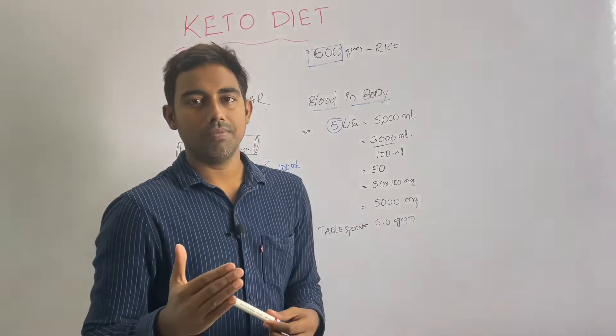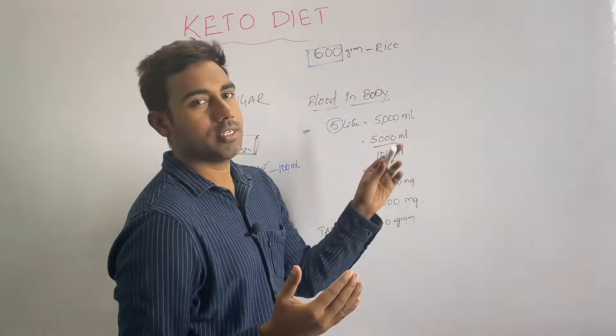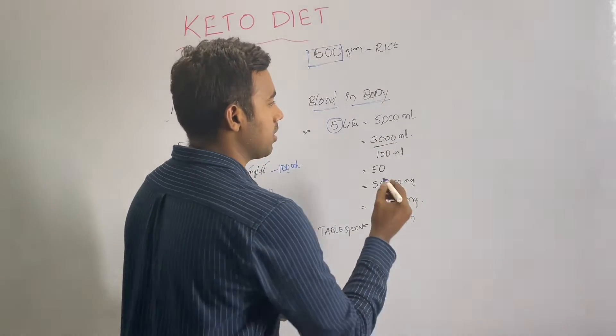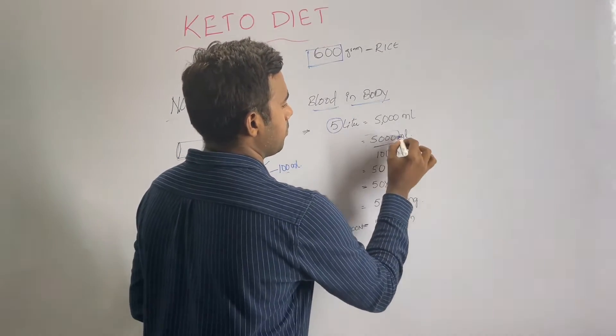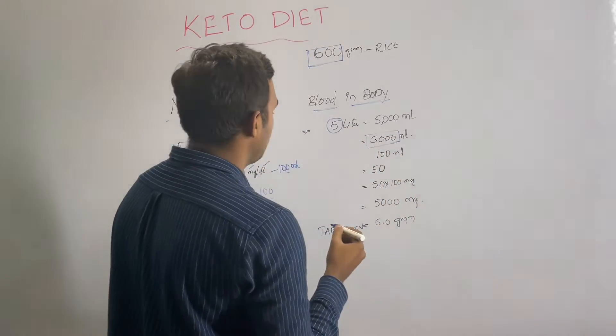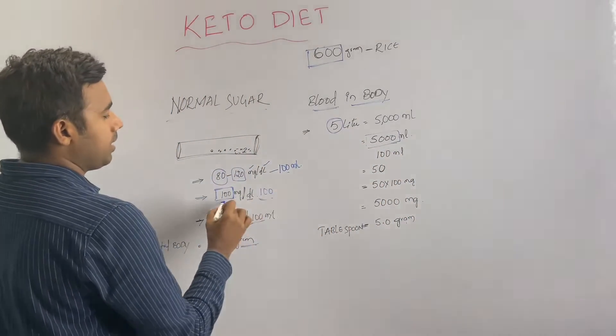The average blood volume in the body is 5 liters, and 5 liters means 5,000 ml.